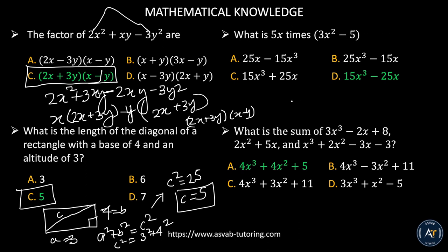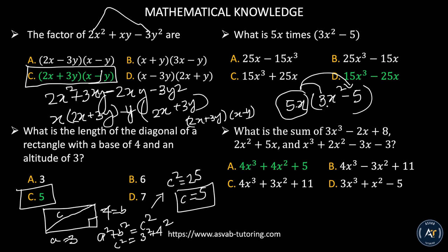What is 5x times (3x squared minus 5)? Distribute: multiply 5x times 3x squared and 5x times negative 5. That gives you 15x cubed minus 25x. The correct answer is letter D.